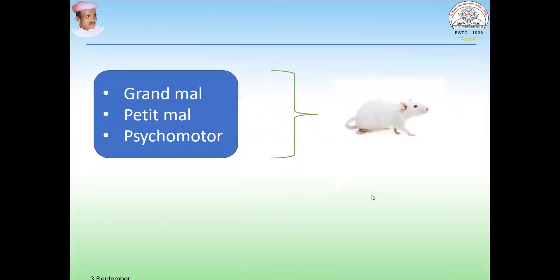There are three types of epilepsy. First is grand mal epilepsy. Second is petit mal epilepsy and third is psychomotor epilepsy. In grand mal epilepsy, it is a generalized type where tonic-clonic movement can be observed along with loss of consciousness. In petit mal epilepsy, there is a sudden impairment or loss of consciousness observed, with little or no tonic-clonic movement. Psychomotor epilepsy involves sudden changes in awareness, partial consciousness, and antisocial behavior is widely observed.